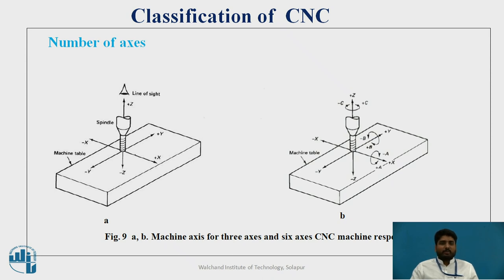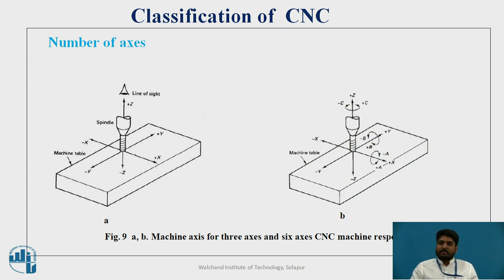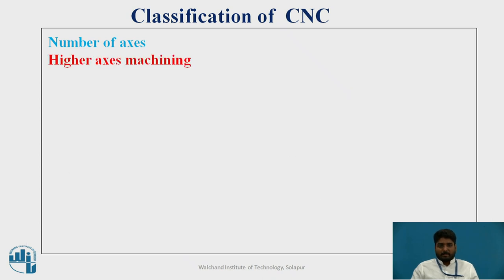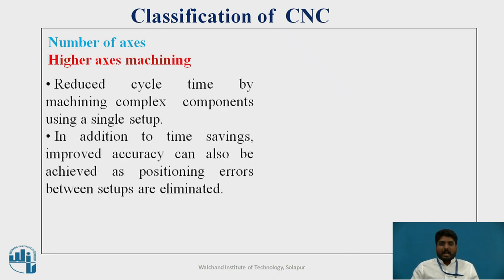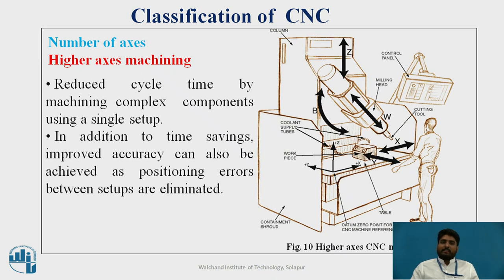In figure A, the workpiece is rotated in the X, Y, and Z axes — making it a 3-axis system. In figure B, the workpiece is rotated in all 3 directions as well as the XY, YZ, and ZX directions, giving it 6 axes — these are advanced CNC machines. This is high-axis machining which reduces cycle time and is used for complex components. It saves a lot of time, improves accuracy, and errors are almost eliminated.